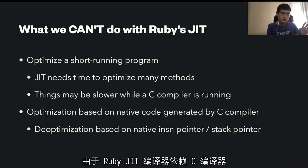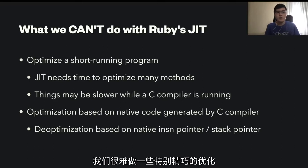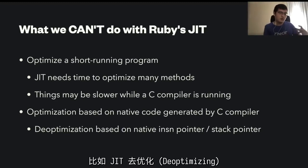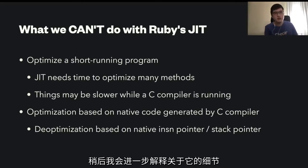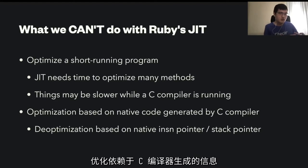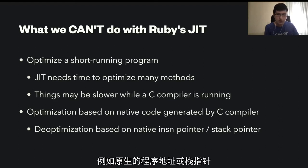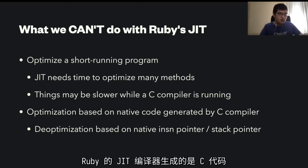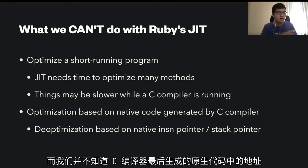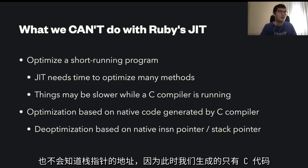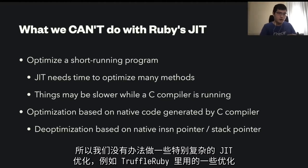Also because of the JIT compiler architecture using C compiler, we can't implement very highly sophisticated optimizations like de-optimization — or optimization based on what C compiler generates, like native code addresses and stack pointers in the native machine — because JIT compiler of Ruby generates only C code. When we generate C code, we can't know the address of the native code generated by C compiler, and we can't know the address of the stack pointer when we just generate C code. Because of that, we are blocked from implementing some very highly sophisticated optimizations which other implementations like TruffleRuby implement.